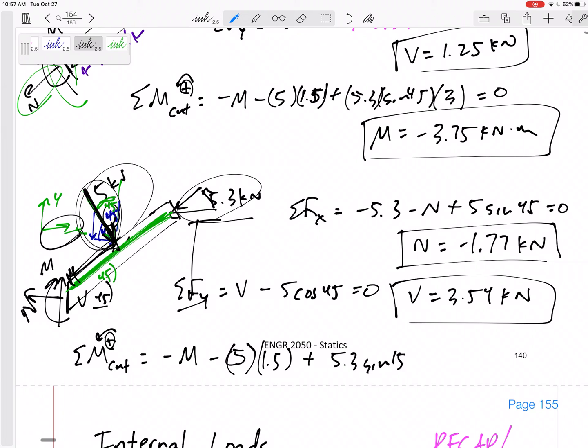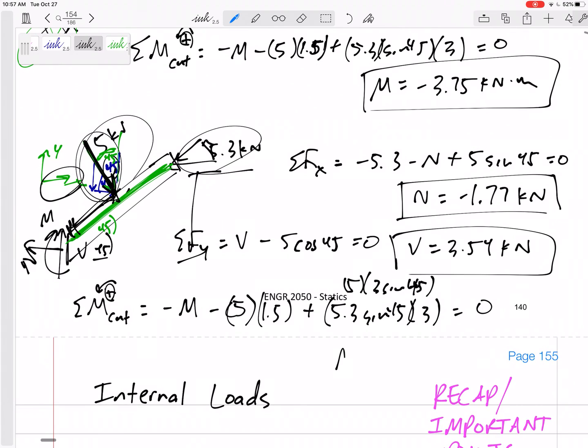And then the other one 5 I could break it up into those components or I could just take that times its perpendicular distance either way I'm going to get 5.3 sine 45 times 3 or 5 times 3 sine 45. Set that equal to 0 and I've got an M of negative 3.75 kilonewton meters. So actually the moment it doesn't matter the orientation that you cut it, but the V and the N will change if you cut it at a different angle.